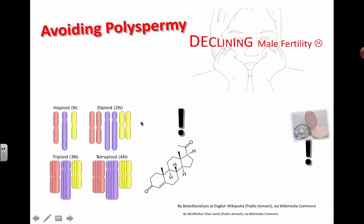One thing we have to make sure of when we actually make a new human is that when a sperm cell and an egg cell get together, you only have two haploid cells combining. You don't want polyspermy — which is a fancy way of saying many sperms — many sperm cells actually fertilizing a single egg. This doesn't normally happen; otherwise an individual would end up with a really strange number of chromosomes.